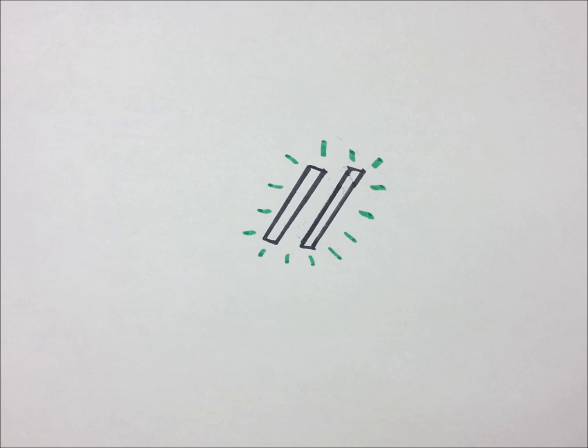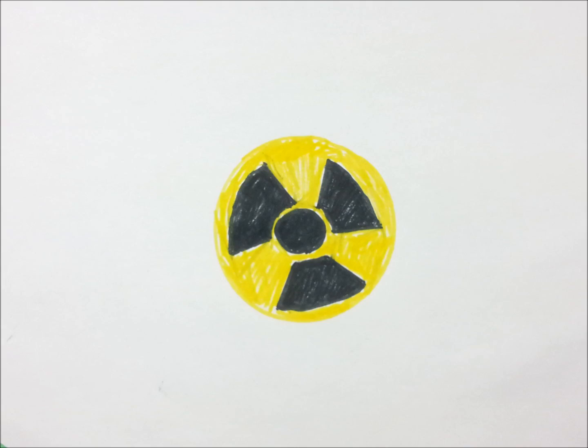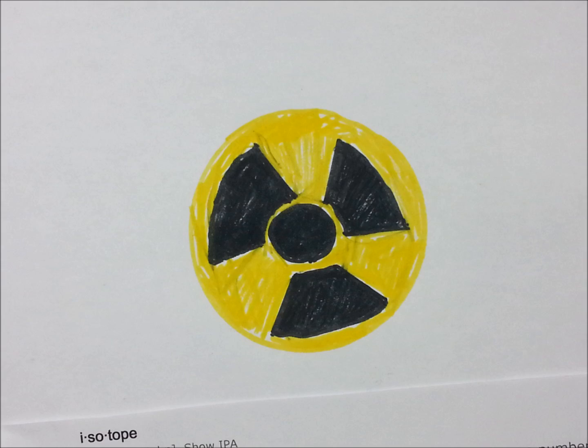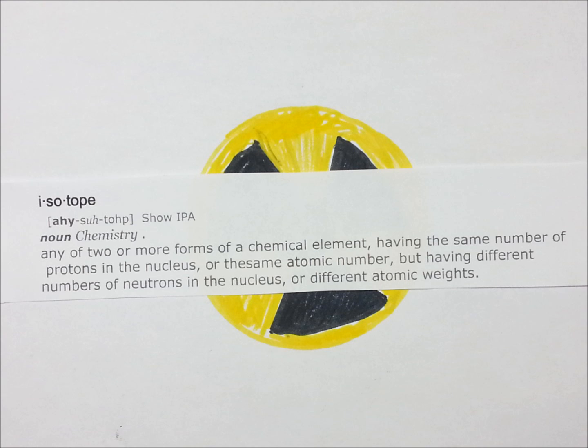What is a radioactive isotope and how can it harm us? Well, first off, what's an isotope? Isotope: any of two or more forms of a chemical element having the same number of protons in the nucleus, or the same atomic number, but having different numbers of neutrons in the nucleus, or a different atomic weight.